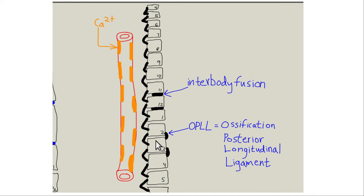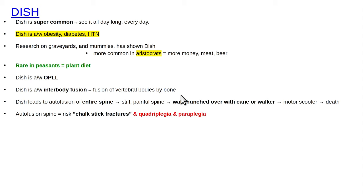It's all degenerative disc disease and it's all primarily ischemic. So what should you do to avoid this? The most common reason people have back pain and their spines end up a disaster is atherosclerosis. Diabetes, hypertension, and obesity are the main causes of atherosclerosis, so you want to avoid those. How? A low-fat, low-sodium vegan diet. That's the main thing you can do to give your spine good blood flow and prevent spine problems.